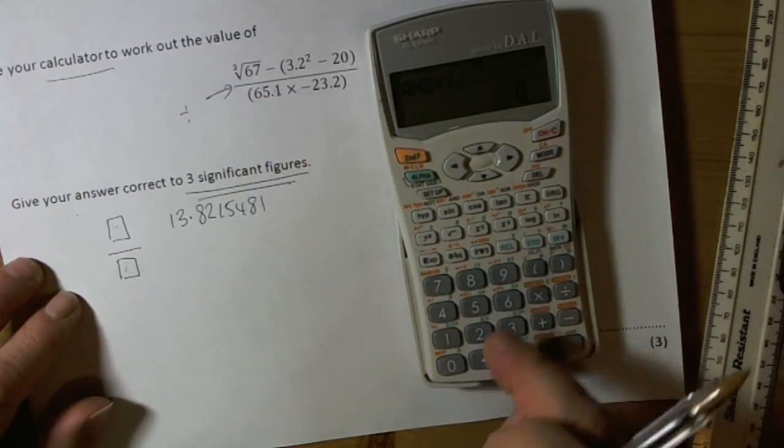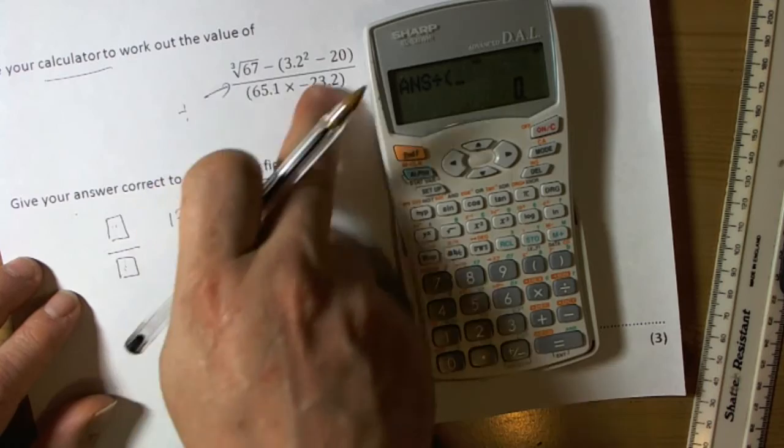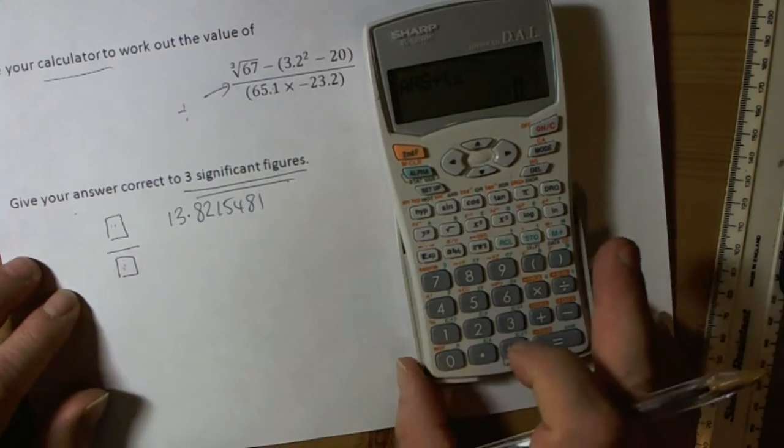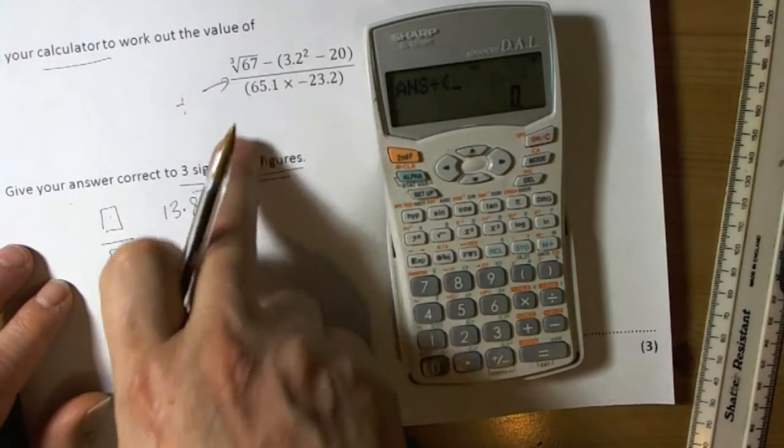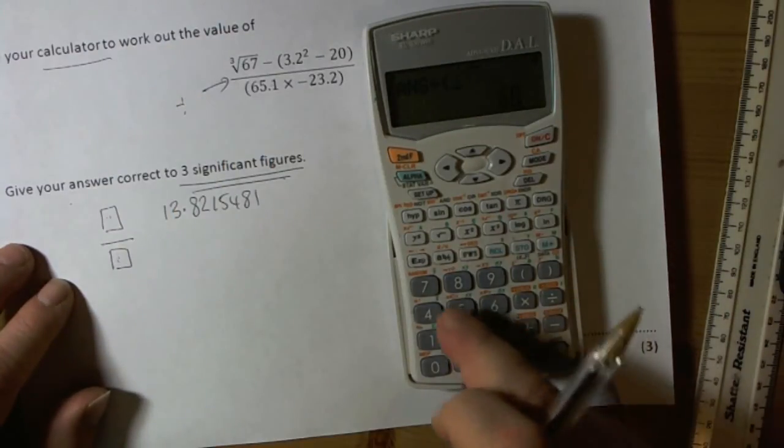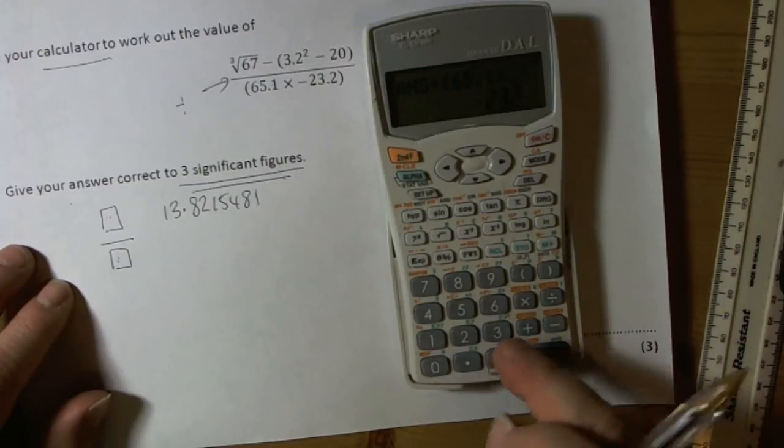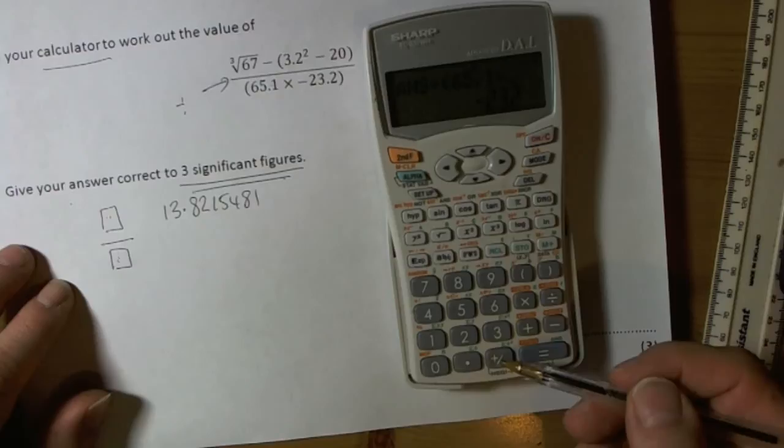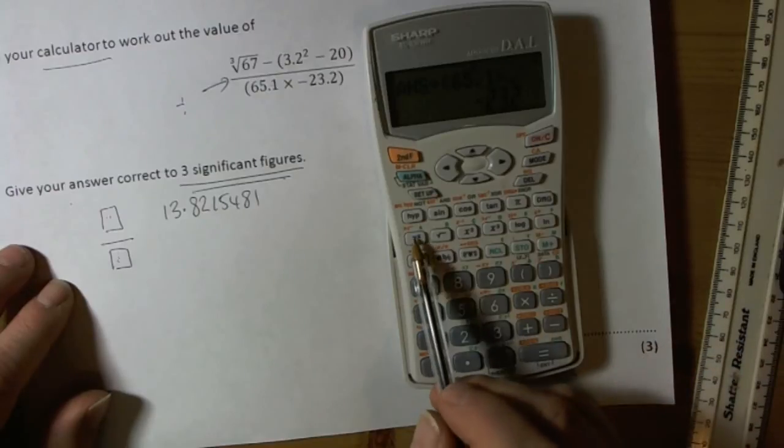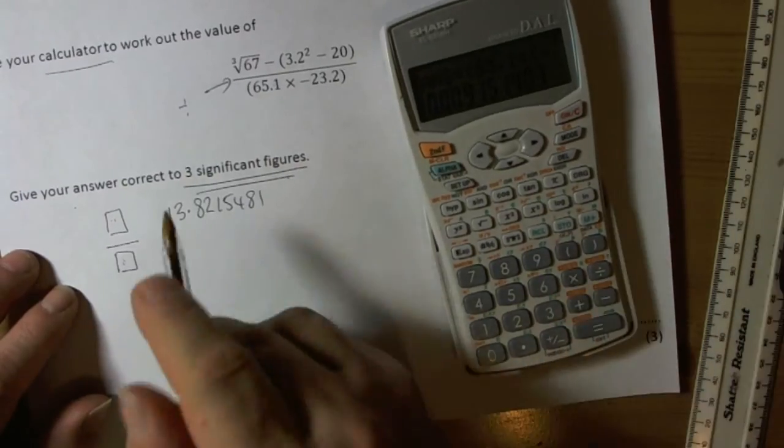So press divide and do the bottom as it's written. So bracket, and sometimes this bracket's not given to you, but literally just imagine the bracket goes in and that makes the question easier for you. And in essence, if you're using this type of calculator, you do need to use the bracket on the bottom anyway. So 65.1 times 23.2 negative, so the negative key on here is the plus or minus key. Sometimes you've got a symbol that looks like a minus sign, so you press that and then 23.2, close the bracket, equals.